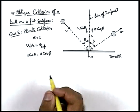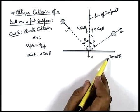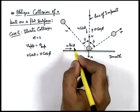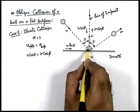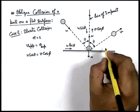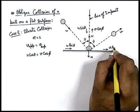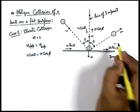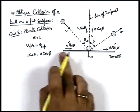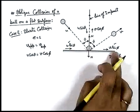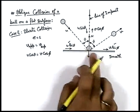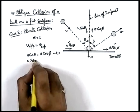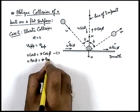We can also observe that the floor is smooth, which means the horizontal component of velocity, which is u sin theta, will not experience any force in the horizontal direction. So after collision, v sin phi, the horizontal component of the final velocity, must be exactly equal to u sin theta, because momentum in the horizontal direction of the ball must remain constant as no external force is acting on the ball. So we can write: u sin theta equals v sin phi.